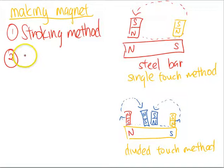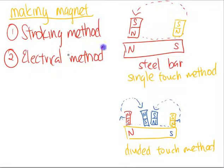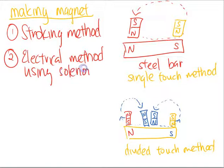The second way of creating a magnet is by what we call the electrical method using a solenoid. How do we use the electrical method using a solenoid?